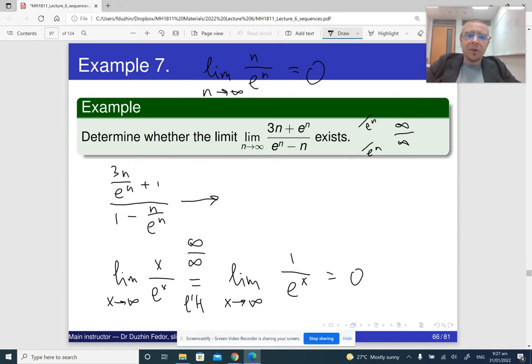So n over e to the n goes to 0. So this is going to be 3 times 0 plus 1 over 1 minus 0, which is 1.